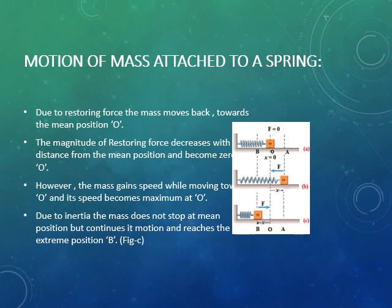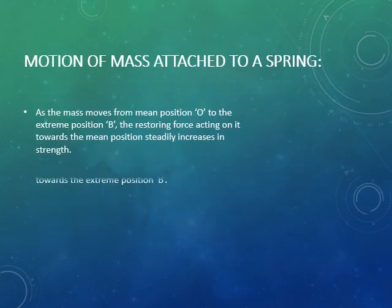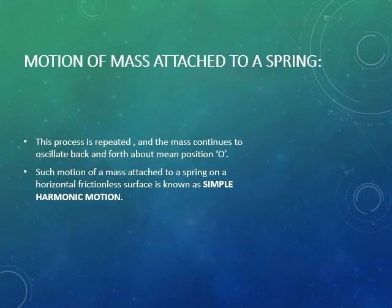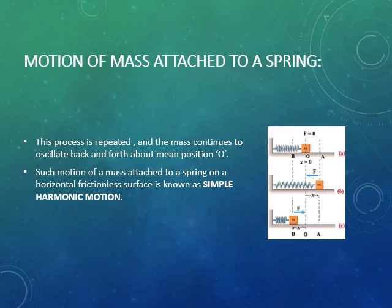Inertia is the property of a body due to which it continues its state of rest or motion. So due to inertia the mass does not stop at the mean position but continues and reaches the extreme position. As the mass moves from mean position O to extreme position B, the restoring force acting on the body towards the mean position steadily increases in strength, hence the speed of the mass decreases. The mass finally comes to rest at extreme position B, then returns to the mean position due to restoring force. This process is repeated and the mass continues to oscillate back and forth about mean position O — such motion is known as simple harmonic motion.